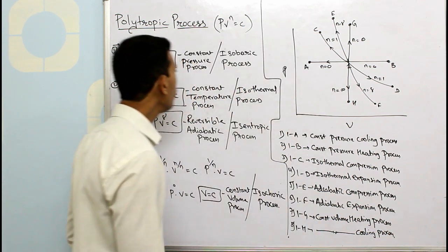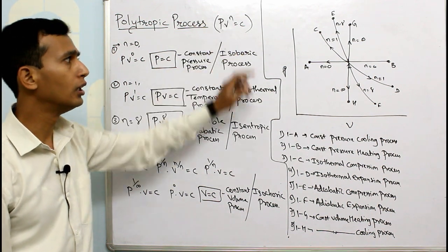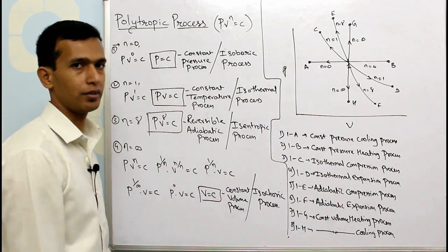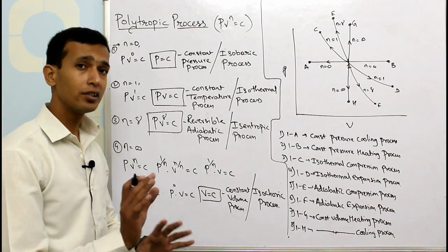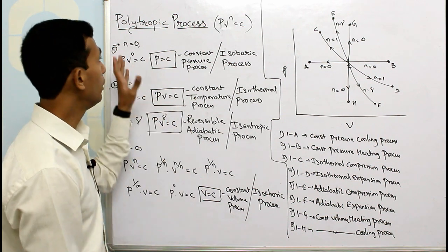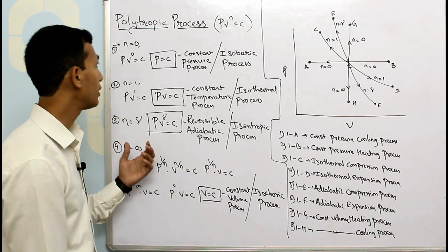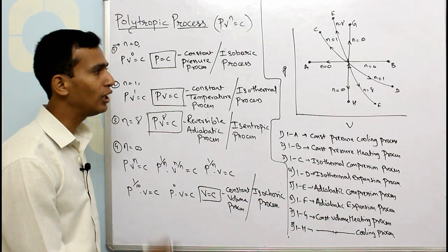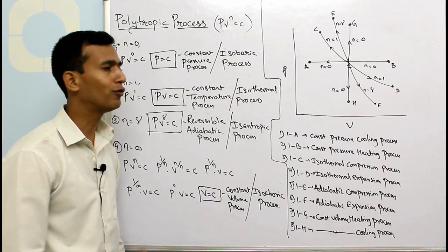So by remembering only four values of n and substituting them in the polytropic equation, we can obtain the PV diagram of each and every process. The calculation of work done and heat in a polytropic process will be discussed in the coming video — part two. I hope you enjoyed and understood this video. Please like and subscribe to our channel, and thank you for watching.